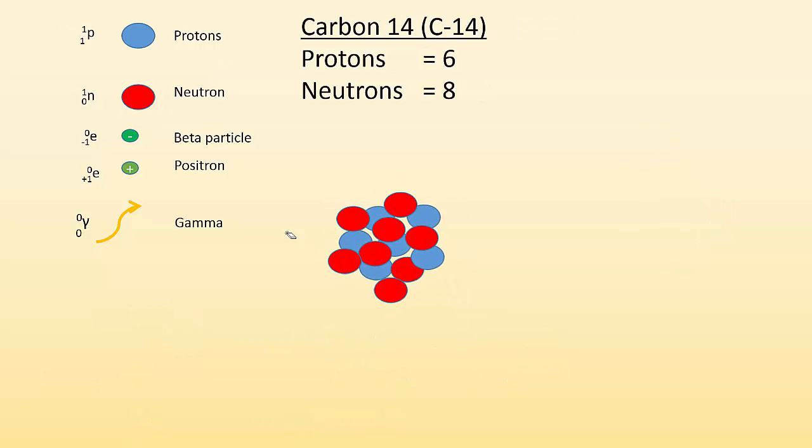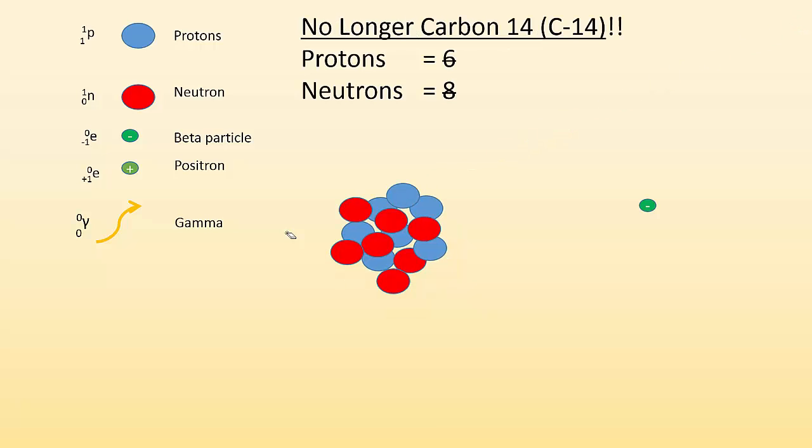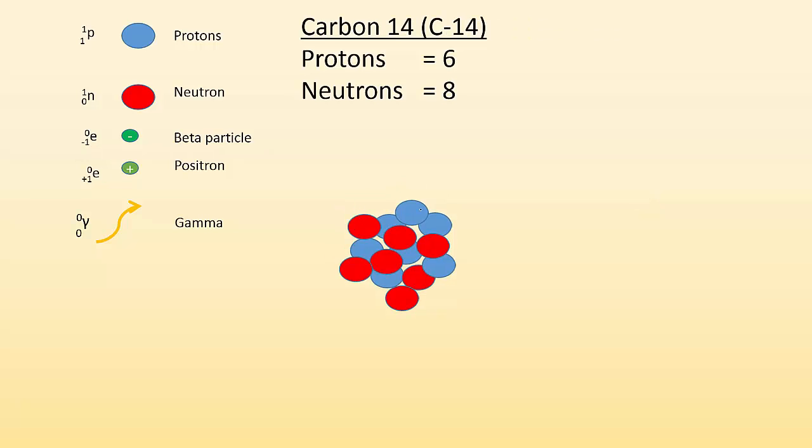So now we've got a new example, carbon-14. Carbon-14 has an unstable nucleus as well, and it's bugging out, as you can see. And then it's going to emit a particle. Right? And if I slow it down, you can see that what it gave off was a beta particle. So I have a beta particle, which is the same thing as an electron. Now what's interesting is if you take a look at what happened to this nucleon, it started as a neutron, and then it gave off a beta particle, and now it's a proton.